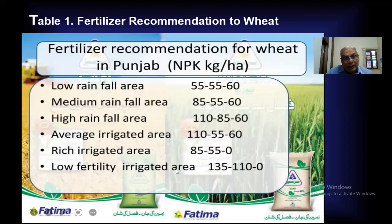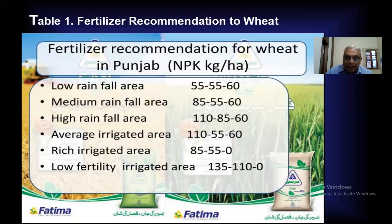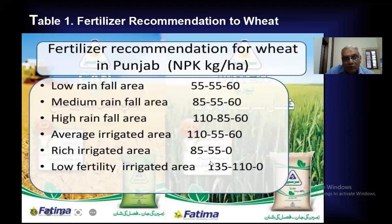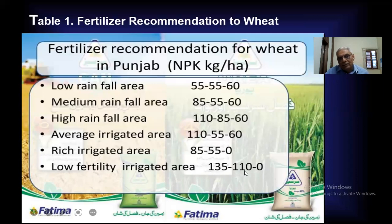For low fertility irrigated areas where there is sufficient rainfall but fertility is low, we should apply a high rate of nitrogen and phosphorus — approximately 135 kg nitrogen per hectare along with appropriate phosphorus and potassium rates.